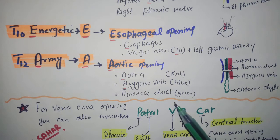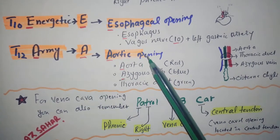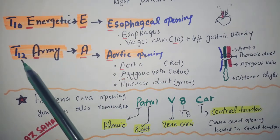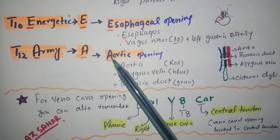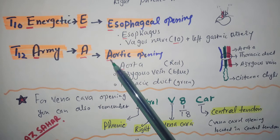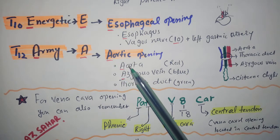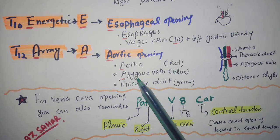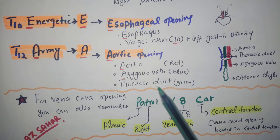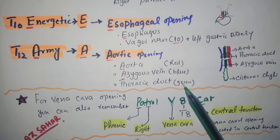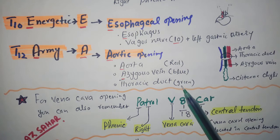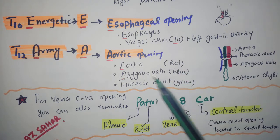The aortic opening is located at the T12 vertebral level and transmits the aorta, azygos vein, and thoracic duct. As a memory aid: aorta is red (oxygenated blood), azygos is blue, and the thoracic duct contains white lymphatic fluid — so red, blue, white.